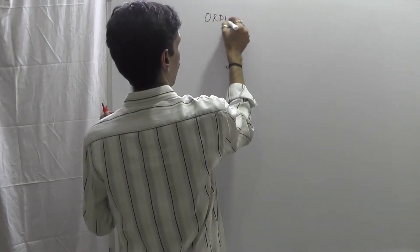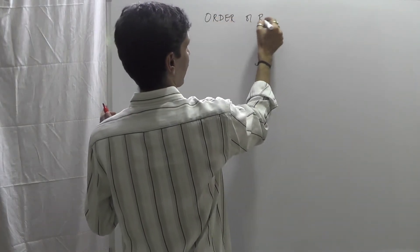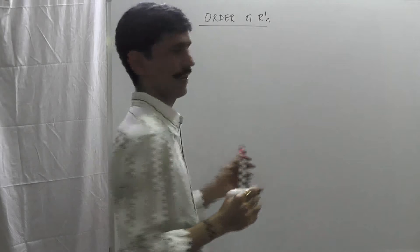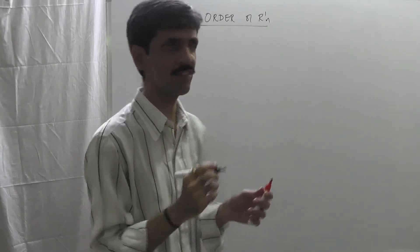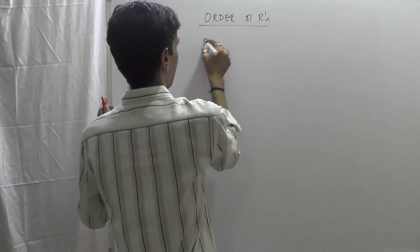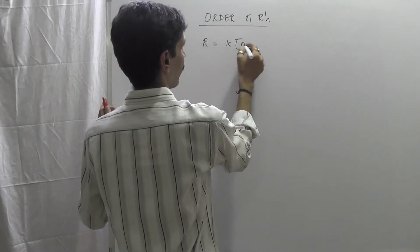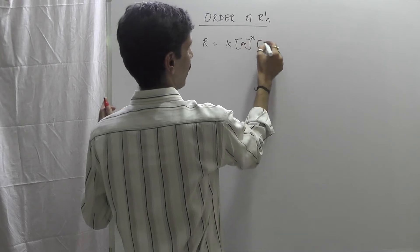Now, what is an order of reaction? We try to understand that. So first, we go to the rate law expression and I hope you still recall it. R is equal to K[A] raised to X and [B] raised to Y.